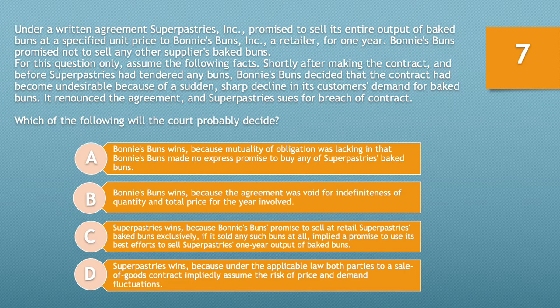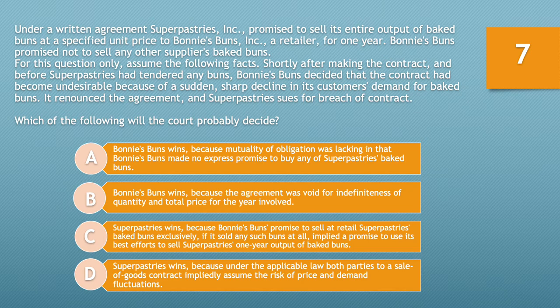Which of the following will the court probably decide? A, Bonnie's Buns wins because mutuality of obligation was lacking and Bonnie's Buns made no express promise to buy any of Super Pastries' baked goods. B, Bonnie's Buns wins because the agreement was void for indefiniteness of quantity and price. C, Super Pastries wins because Bonnie's Buns' exclusive promise implied a duty to use best efforts to sell Super Pastries' one-year output. Or D, Super Pastries wins because both parties to a sale of goods contract impliedly assume the risk of price and demand fluctuations. Take 10 seconds.